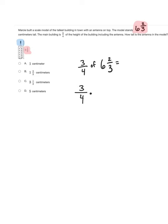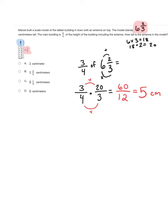Three-fourths times six and two-thirds. I need to convert six and two-thirds to an improper fraction. Multiply your denominator times your whole number, six times three equals 18, then add your numerator. 18 plus two gives me 20. So six and two-thirds is equivalent to twenty-thirds. Now I multiply my numerators and denominators then simplify. Three times 20 equals 60 and four times three equals 12. Sixty divided by 12 equals five. So the height of the antenna is D, five centimeters.